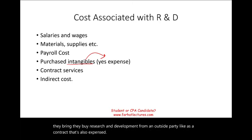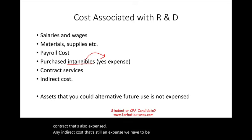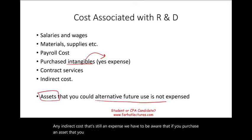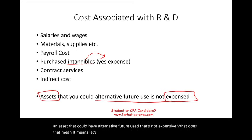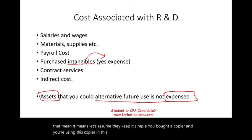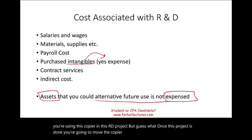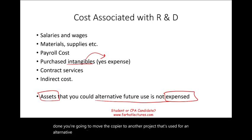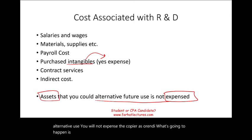We have to be aware that if you purchase an asset that could have an alternative future use, that's not expensed as R&D. For example, if you bought a copier and you're using it in this R&D project, but once this project is done you're going to move the copier to another project, you will not expense the copier as R&D. The copier will be its own asset.